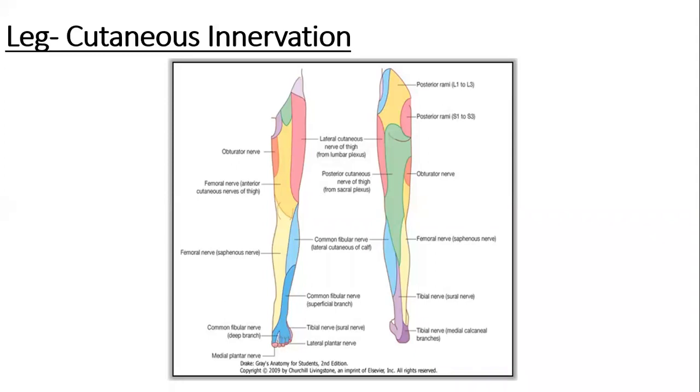Then the sural nerve continues to run down in the leg on the posterolateral side, here in the purple on the posterolateral side of the leg, then posterior to lateral malleolus running deep to the fibularis tendon sheath until it finally reaches the tuberosity, lateral tuberosity of the fifth toe of the foot where it ends by dividing into its terminal branches.